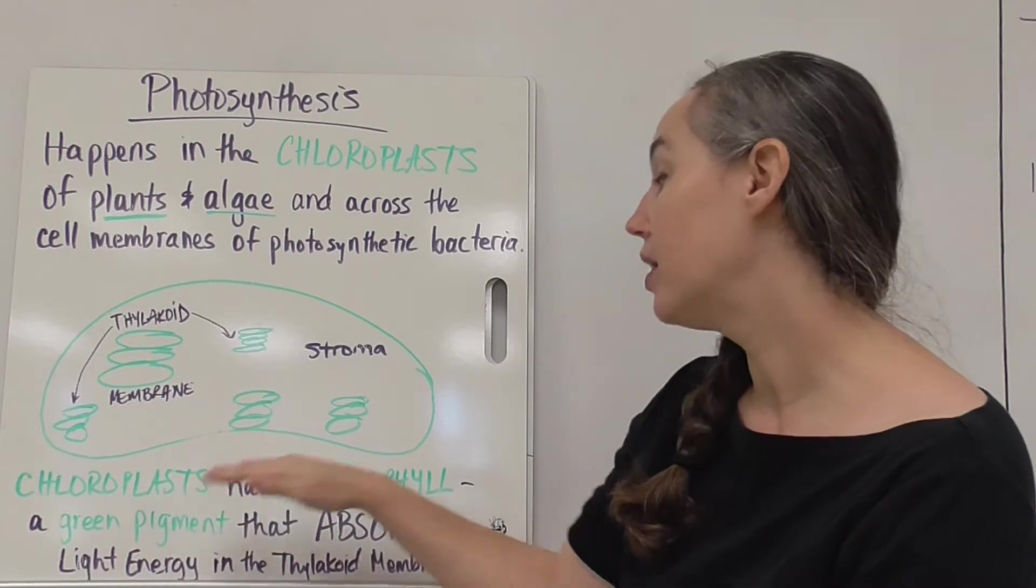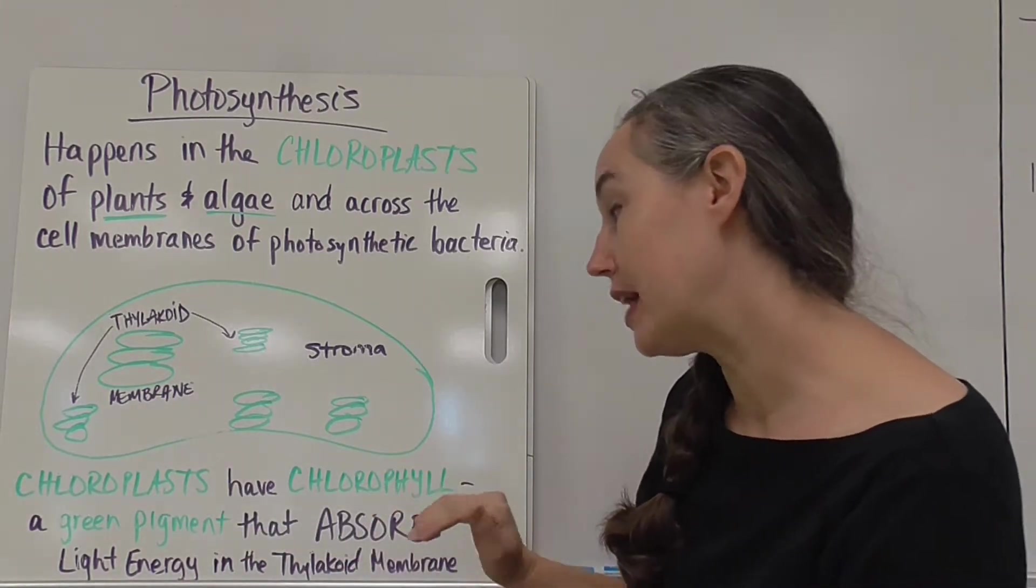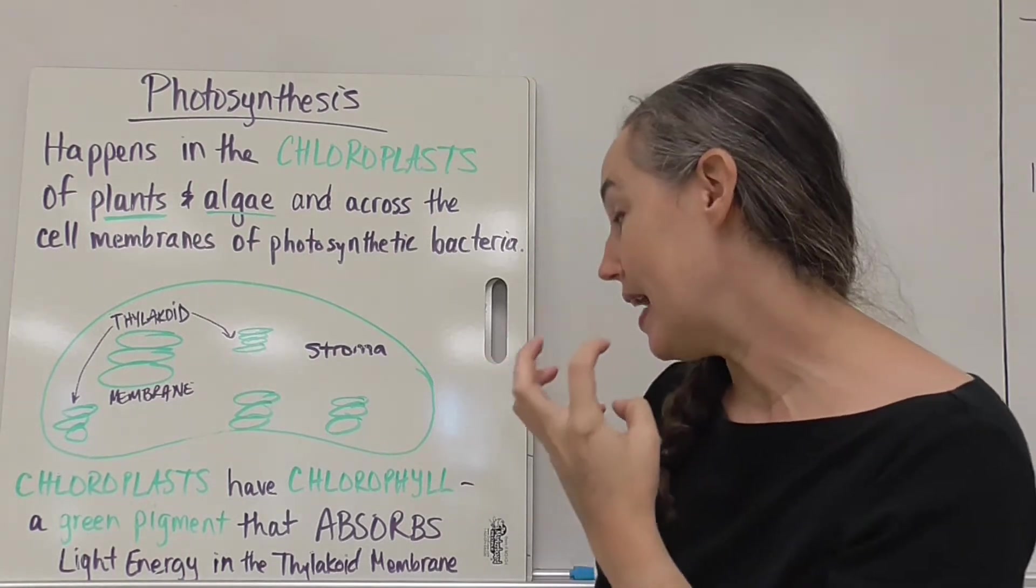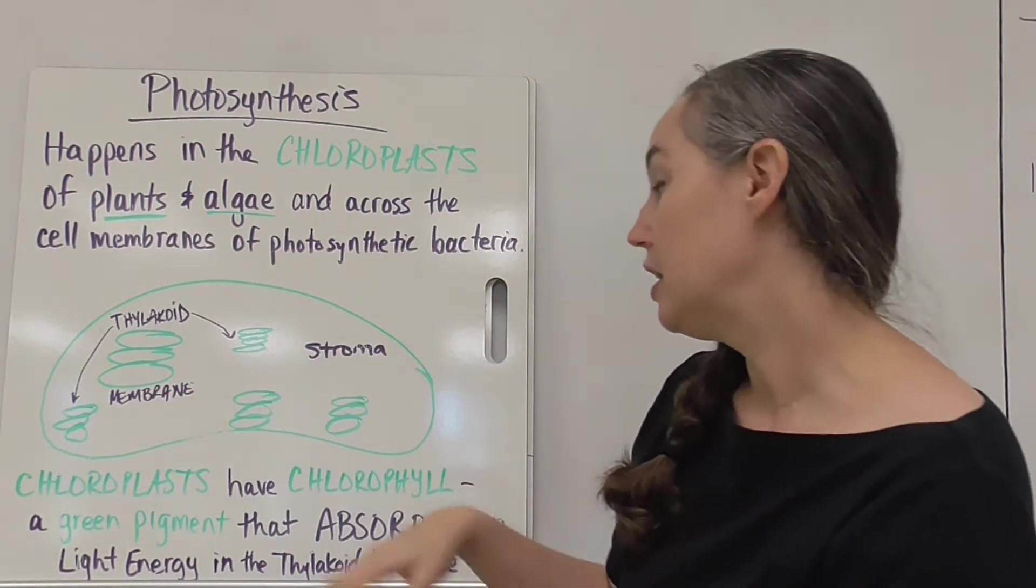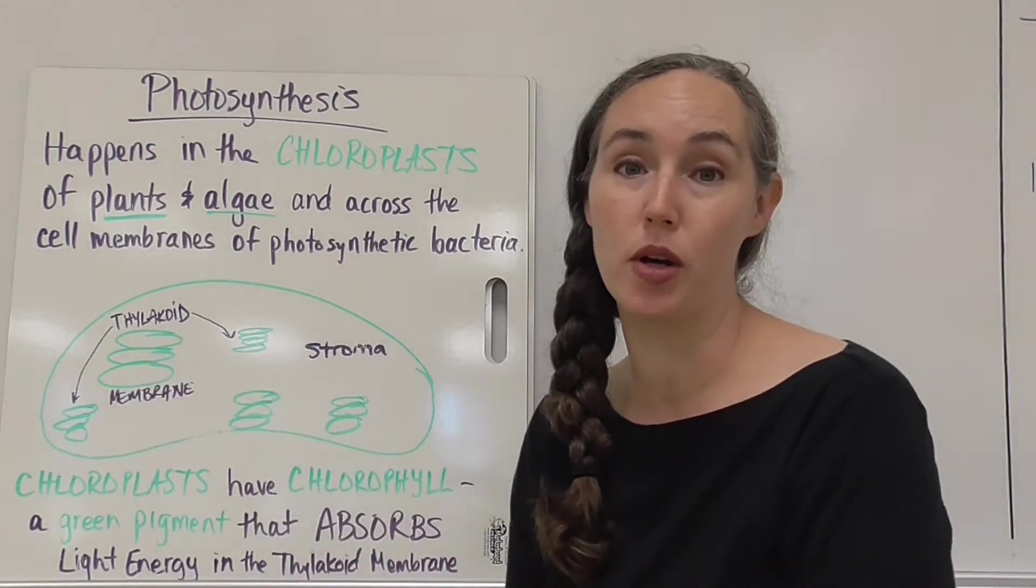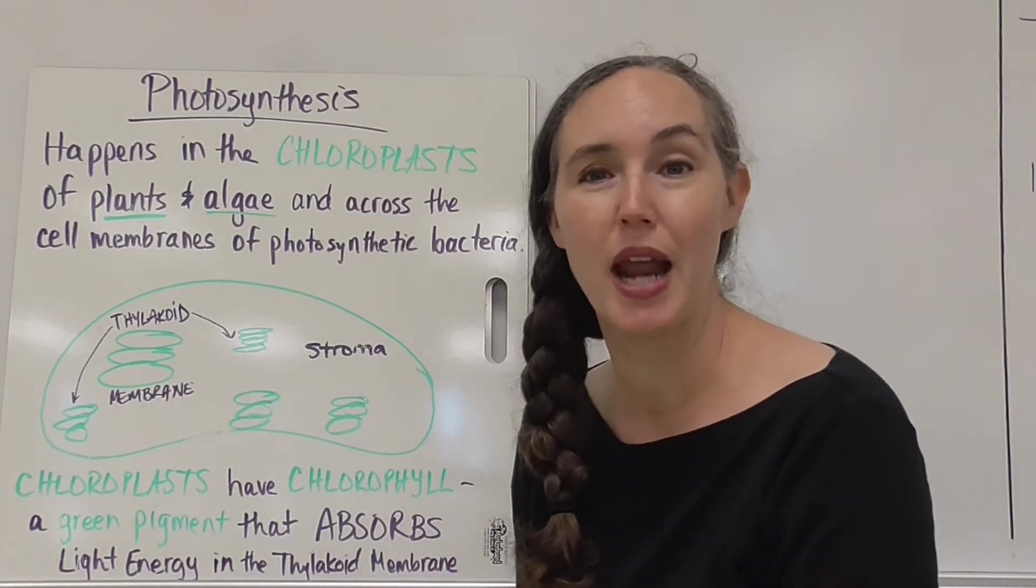Chloroplasts have chlorophyll. That's a green pigment that absorbs light energy and turns it into chemical energy. So the chloroplasts are going to be found within the thylakoid membrane. That's where light absorption happens.